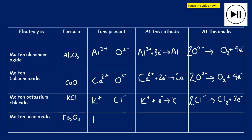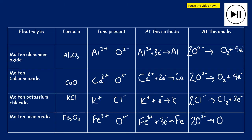Finally, for molten iron(III) oxide: ions are Fe³⁺ and O²⁻. At the cathode: Fe³⁺ + 3e⁻ → Fe. At the anode: 2O²⁻ → O₂ + 4e⁻.